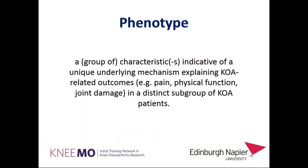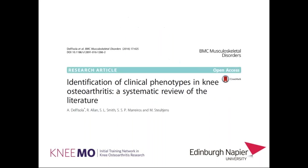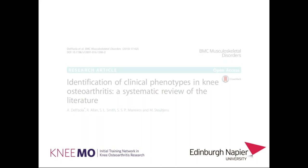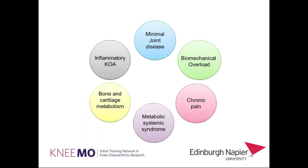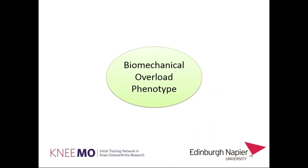Phenotypes are a group of patients characterized by specific characteristics indicative of a unique underlying mechanism, which can explain the outcome of the disease — like pain or physical function. At Glasgow Caledonian University, we conducted a systematic review to identify which phenotypes have been explored and are supported by evidence. Six main phenotypes have been frequently investigated, including subjects with inflammation, chronic pain, or alterations in bone and cartilage metabolism. Today I want to talk specifically about a phenotype characterized by biomechanical overload, which is responsible for the disease.